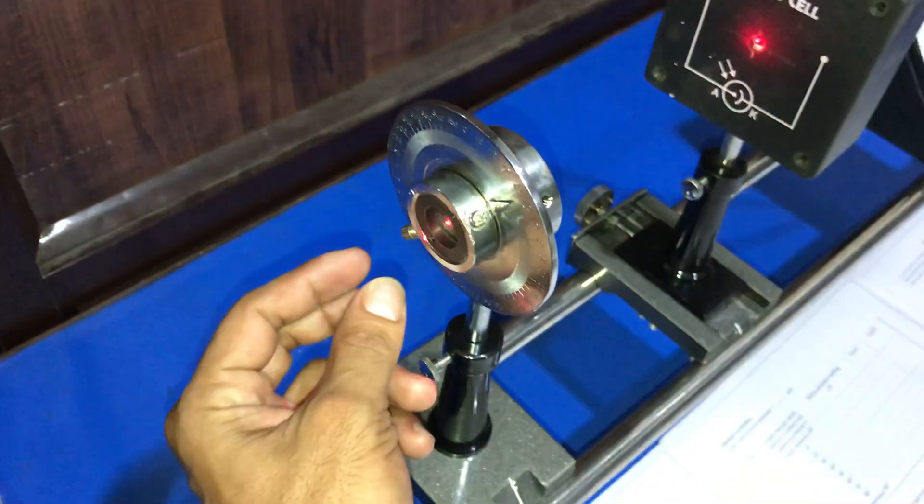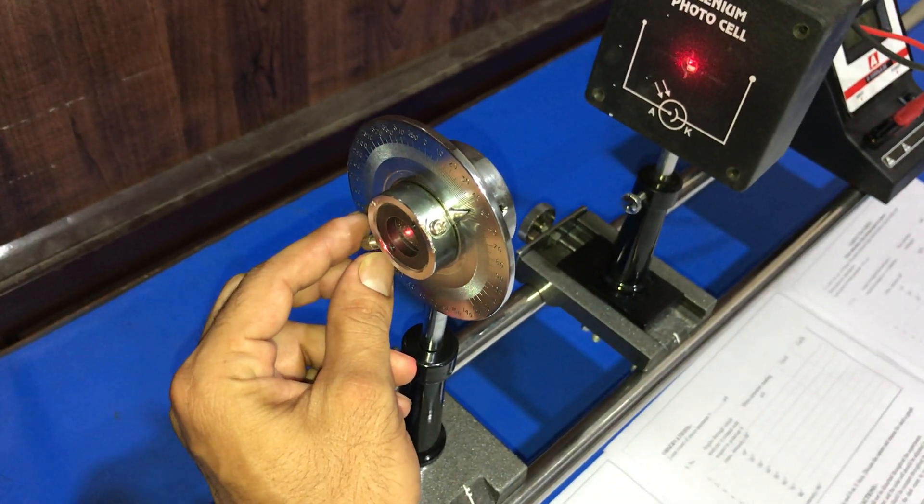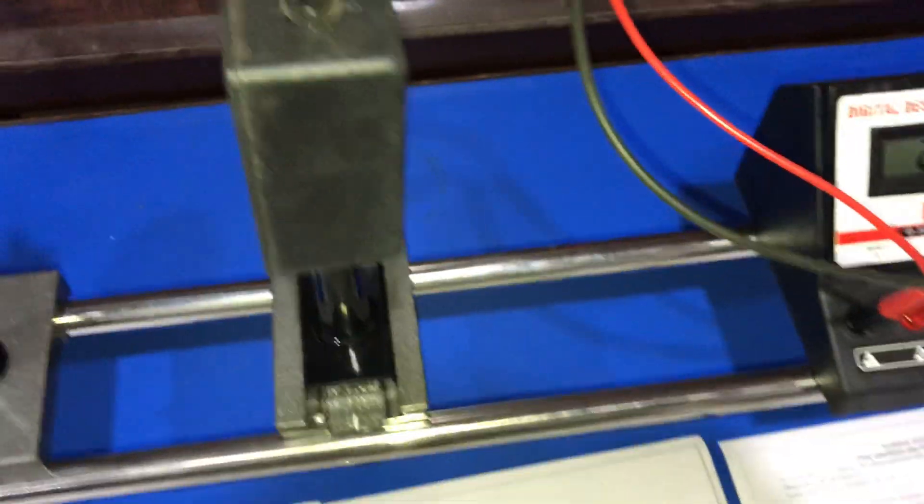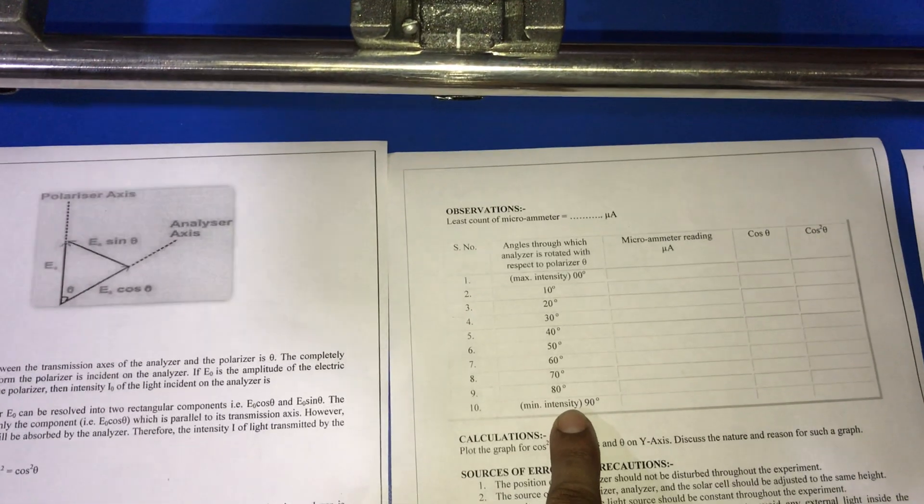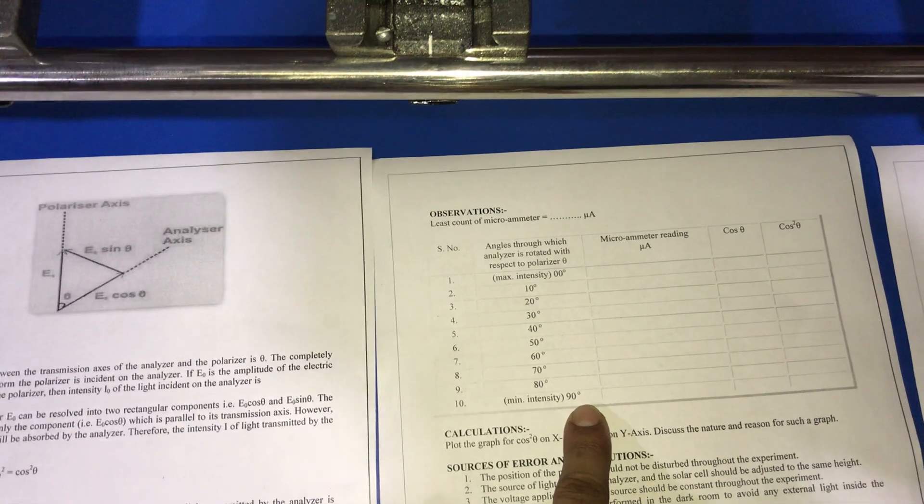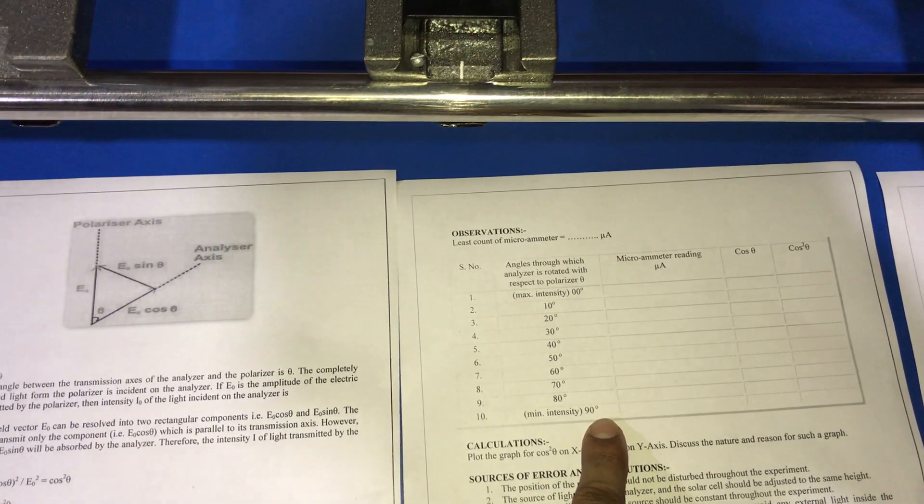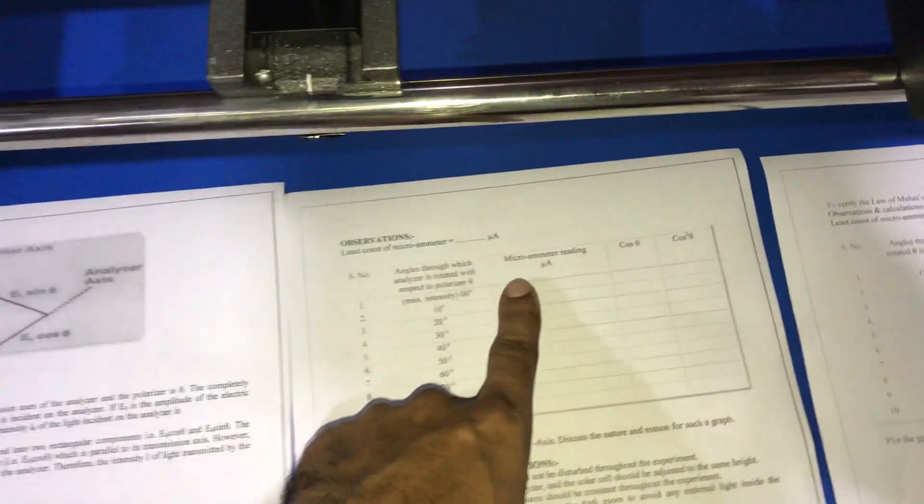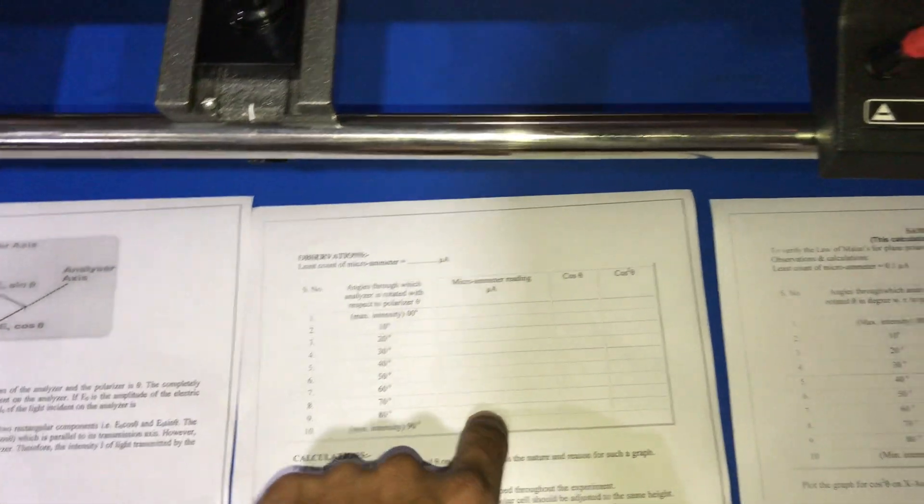We continuously go step by step up to the stage when the minimum intensity is achieved, which is possible at angle 90 degrees between polarizer and analyzer. Every time we note the value of microammeter reading.